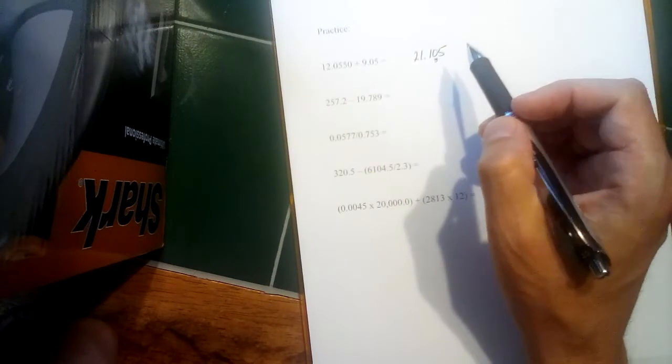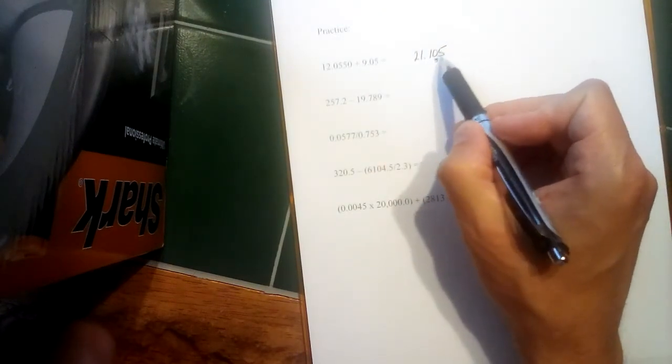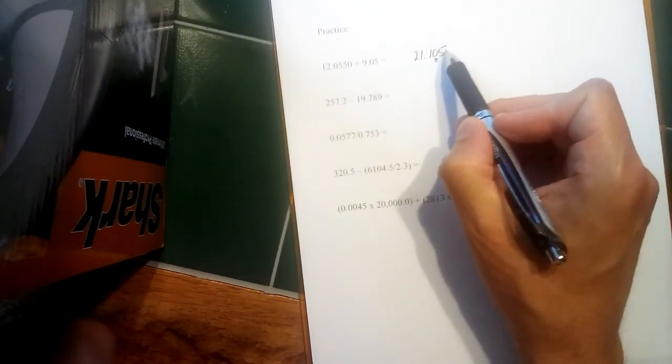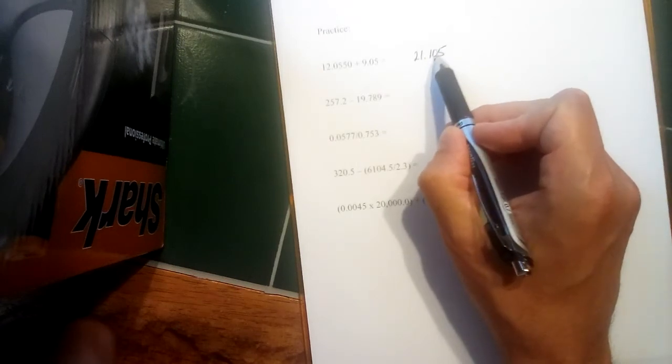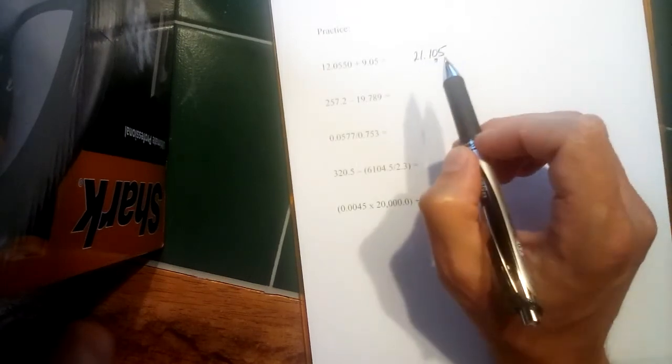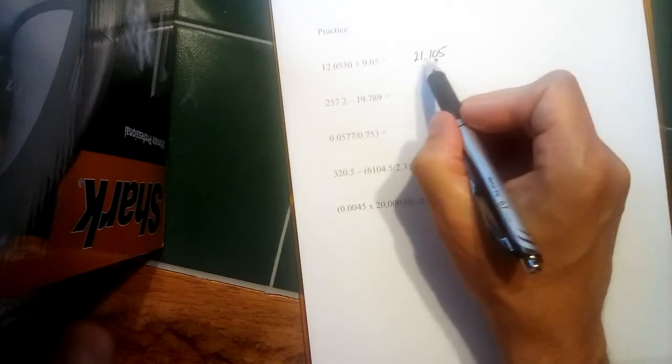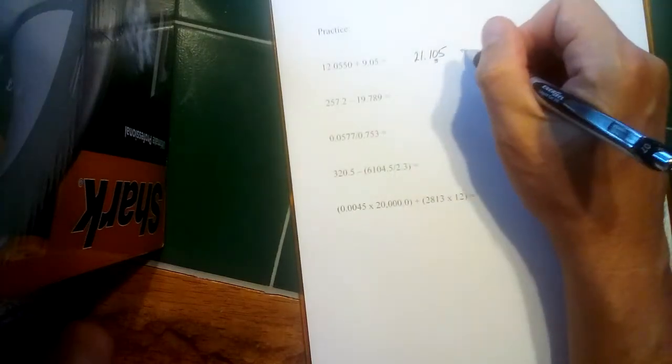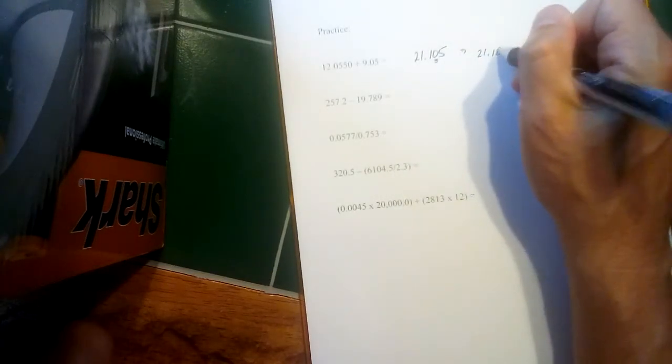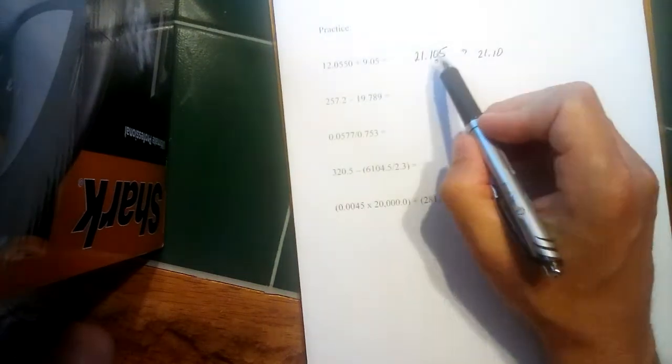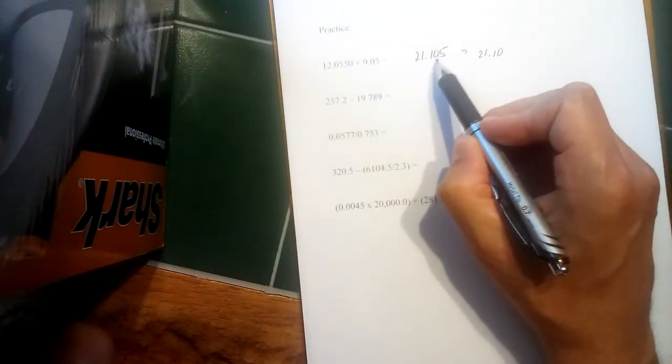So if that was the rule, we would round this to 21.10. Because instead of rounding up to a one, you round down to a zero. That way, half the time you round up, half the time you round down, if what you're dropping is exactly five.